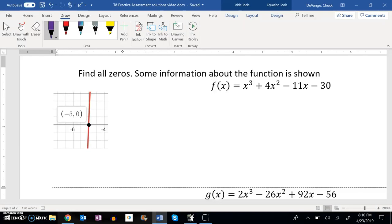Some information about the function is shown. So I know that here's a little slice of the graph, and it goes to the point (-5, 0). So one of the zeros is -5. So that means that x + 5 is a factor.